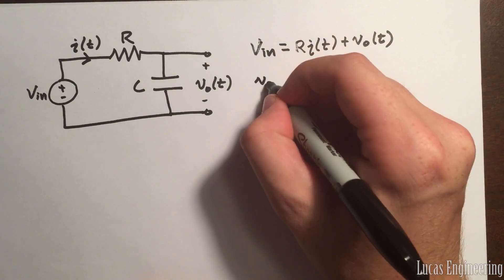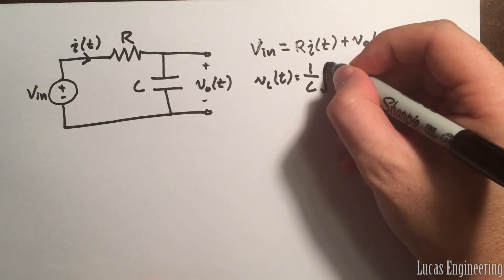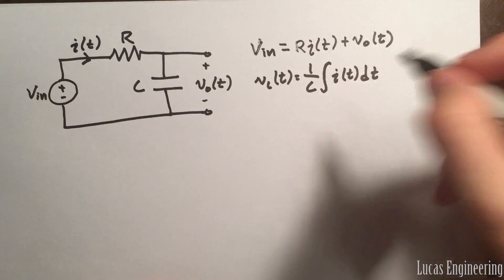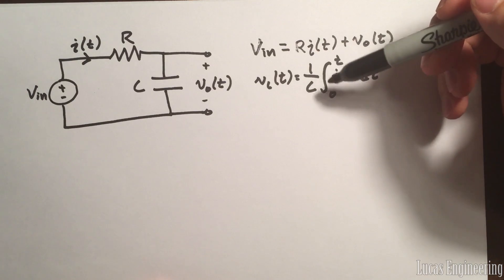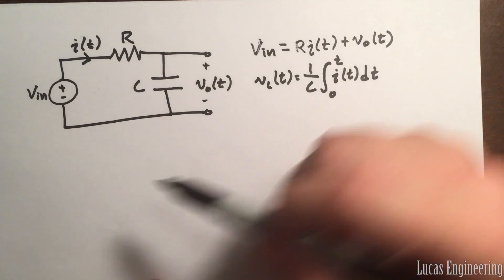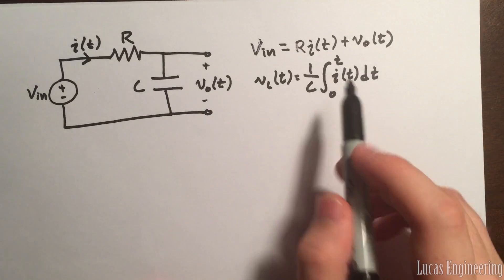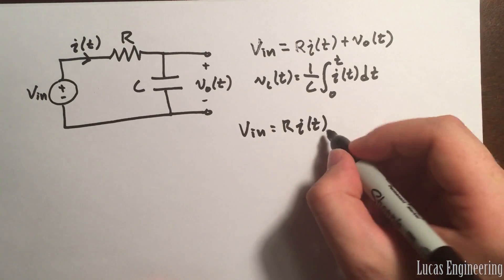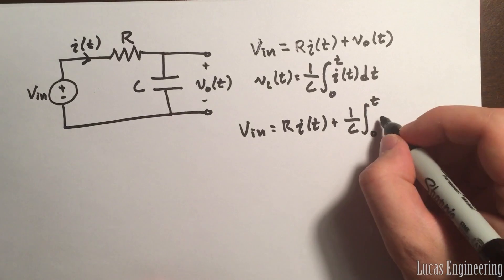The voltage across the capacitor is V_C(T) = (1/C) times the integral of I(T) dT. Our bounds for this problem go from zero to T — we assume the circuit starts at T equals zero, like a switch that closes at T equals zero. Plugging this in: V_n = R·I(T) + (1/C)·∫₀ᵀ I(T') dT'.